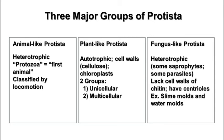The second group, the plant-like Protista, are autotrophic. They have cell walls or some kind of cell covering, often made of cellulose, but sometimes of other substances. They have chloroplasts, they undergo photosynthesis, and there are two main groups: the unicellular plant-like Protista and the multicellular ones.